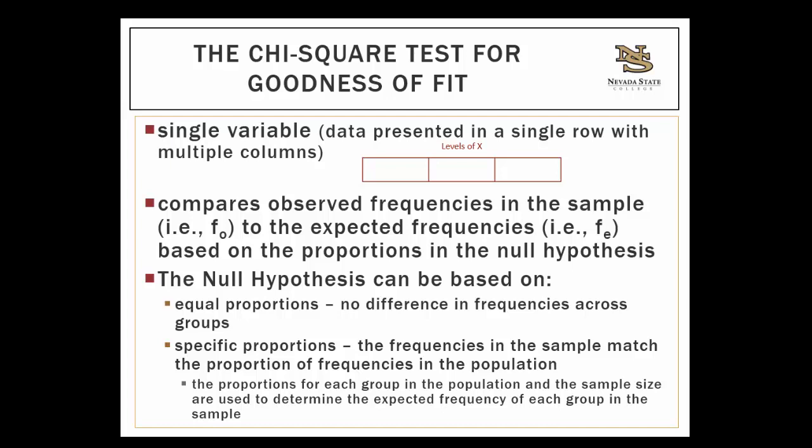Sometimes it makes sense to test a hypothesis based on equal proportions. For example, you could see if there's a significant difference in the number of students earning A's, B's, C's, D's, or F's in Psychology 210. Under the null hypothesis, you would take that sample — say 50 students in the class — and divide by 5 (the five different grades), expecting 10 people in each group. However, sometimes testing equal frequencies does not make sense and you would want to test a hypothesis about specific proportions.